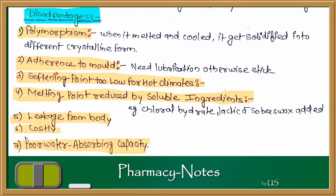The second disadvantage is adherence to the mold — the shape of the suppository can be damaged due to sticking. The third disadvantage is a softening point too low for hot climates. As you can see, the melting point is 30 to 36 degrees centigrade, which is very low for hot climates. So if it is not kept in proper storage conditions, it can melt.